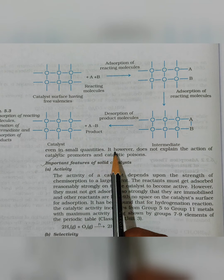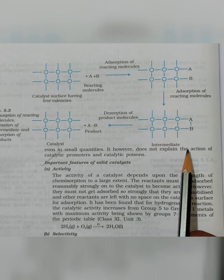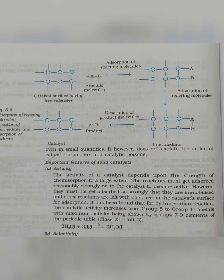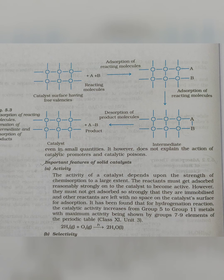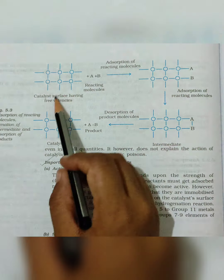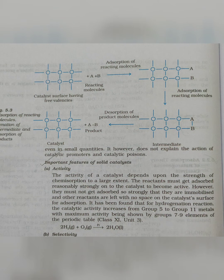The catalyst is effective even in small quantities. However, it does not explain the action of catalytic promoter and catalytic poison. So as I already told you, catalysts are not consumed in the reaction — they just help in increasing the rate of the reaction. But when we were studying about this process, there is nowhere mentioned about the catalytic promoter and poison, so it does not give any information regarding that.